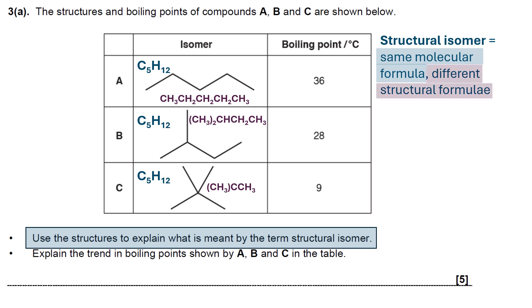This pays attention to the fact that there's more branching as you go further down. You'll also see that the boiling point goes down so something's affecting it. So they want you to explain the trend in the boiling points shown by the three compounds.